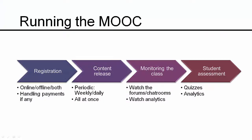For the track of running the MOOC as an event, there are four major areas: registration, content release, monitoring the class, and student assessment. Registration could be done online, offline, or in a hybrid fashion. There may also be issues related to payments if your MOOC is a paid MOOC, so you need to look at how you would receive payments. These are concerns to address during the running of the MOOC.